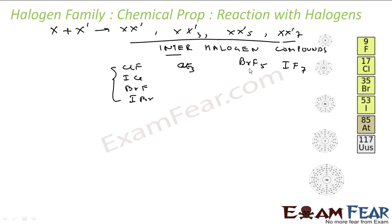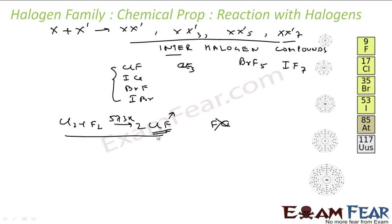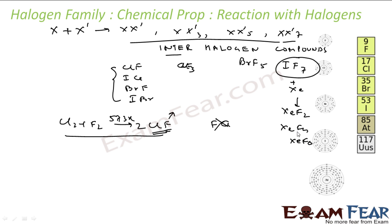Let's talk about the preparation of interhalogen compounds. Chlorine reacts with fluorine to form ClF — we say ClF, not FCl, because chlorine is more electronegative and comes on the right. This requires heating to about 573 Kelvin. Note that IF7 is very reactive — so reactive that it can react with noble gases to form compounds like XeF2, XeF4, or XeF6.